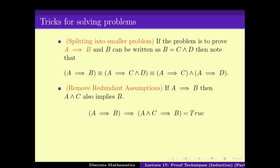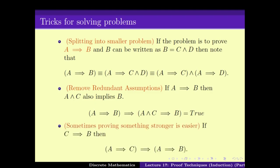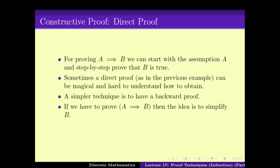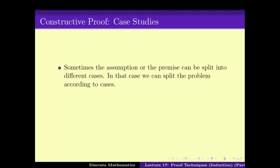We have seen some tricks like how to split a problem into smaller parts, how to remove redundant assumptions, and how sometimes proving something stronger can be easier. We also saw the direct proof where you prove A implies B directly by working with A, or one can go in the backward direction — simplify B to get a simpler version C — and then prove A implies C, which can be easier.